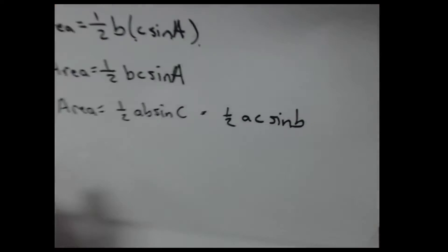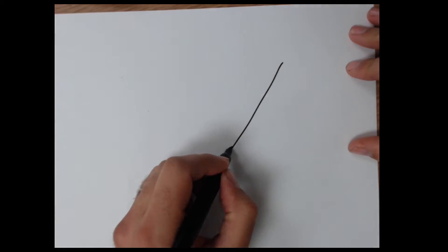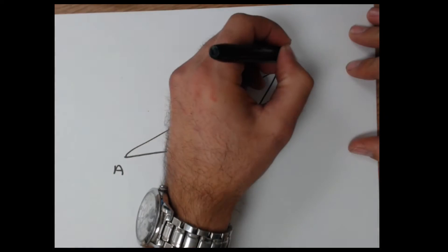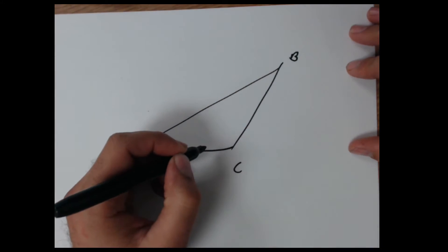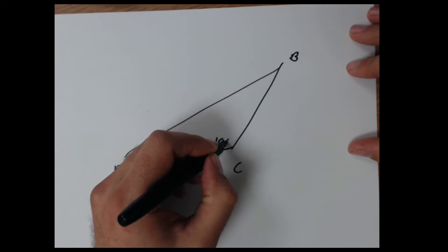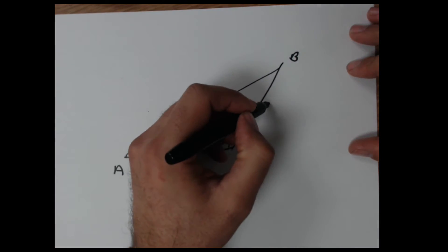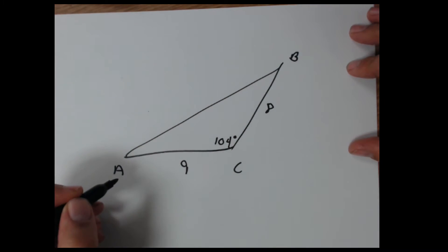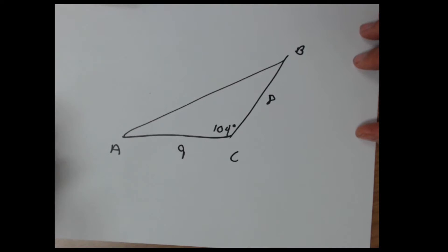So let's do one. Let's say I have a triangle that looks something like this. I have A. Let's put B up here. C down here. Let's call this 104 degrees. This side length is 8. This one is 9. And now I need to find the area of it.